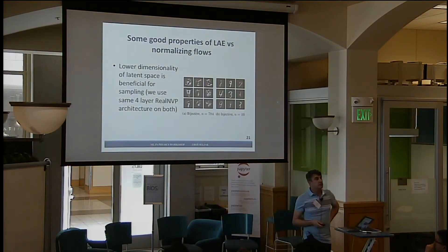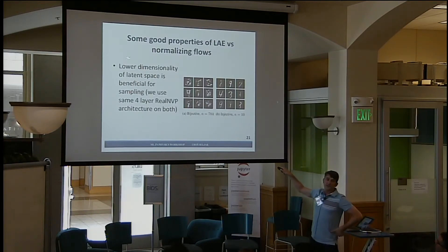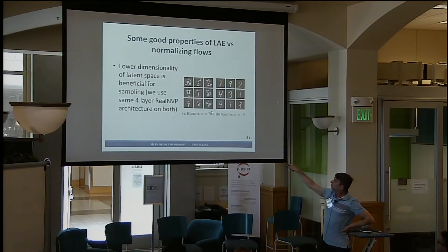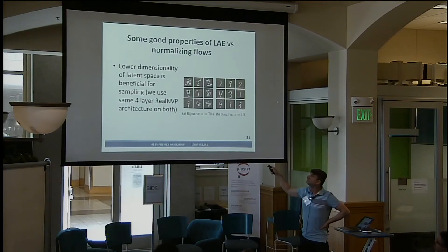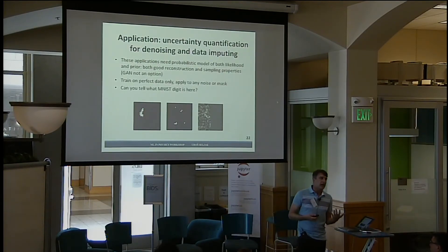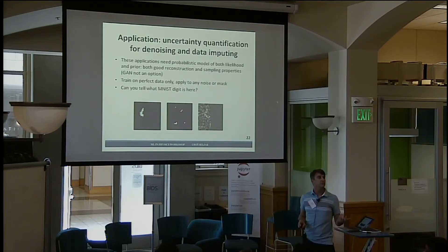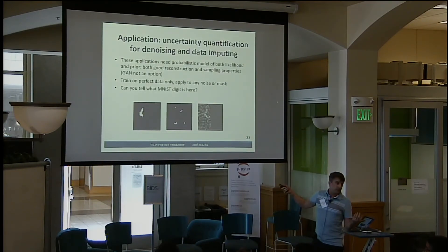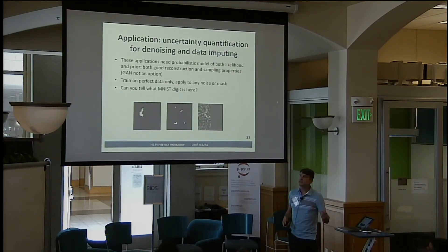Compared to bijective normalizing flows: with the same architecture on MNIST digits at 784 dimensions, if you try to get samples out of a bijective model, they look poor. Whereas with our 10-dimensional latent space, we are able to generate good images. We think the best application for this is where you want both sampling and reconstruction properties — something GANs and bijective flows don't do well, and VAEs can't do well because they're not injective.